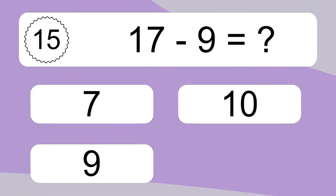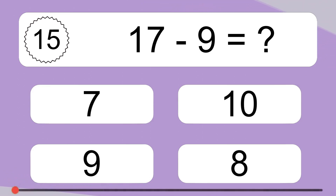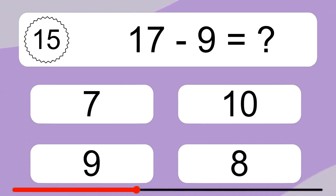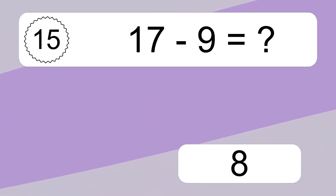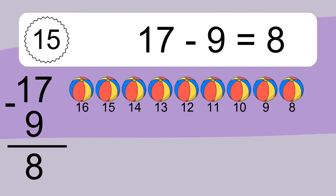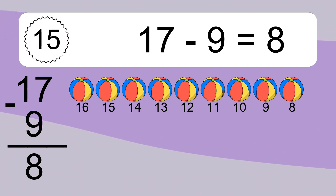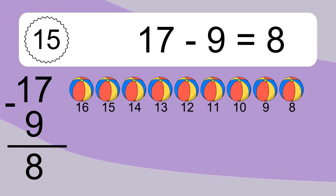17 minus 9 equals what? 17 minus 9 equals 8. Let's count it: 16, 15, 14, 13, 12, 11, 10, 9, 8.